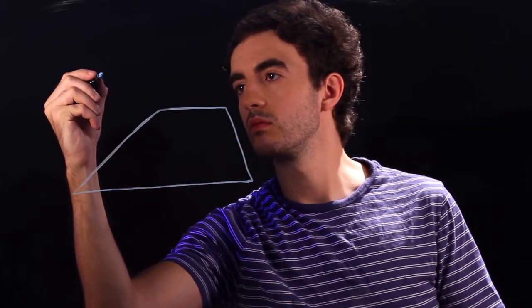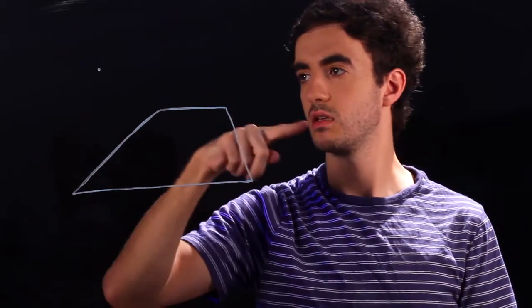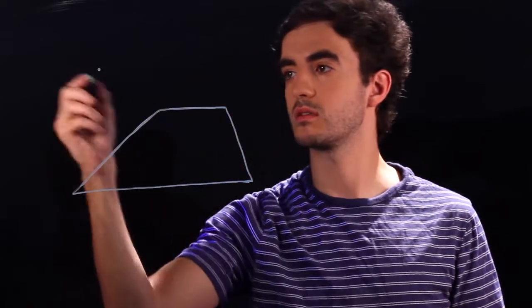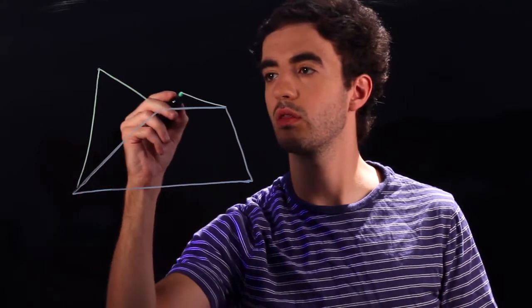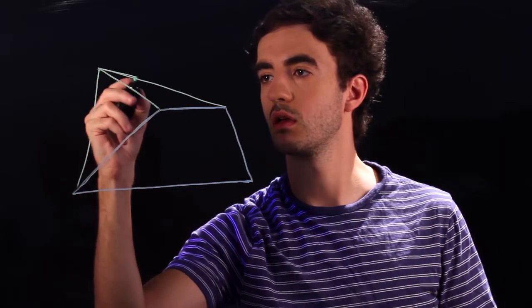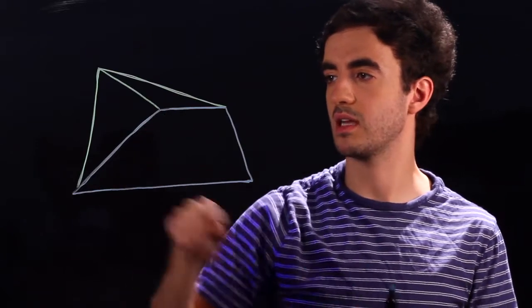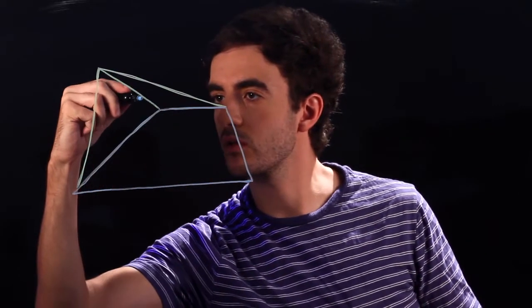To make it 3D we're going to add a vanishing point, right there. Now this helps determine your perspective in the drawing — wherever this is, is wherever you're looking. Now all you have to do is connect all these points to your vanishing point: 1, 2, and 3. And then from here, take this top line and this side line and draw them again, but a little further out.